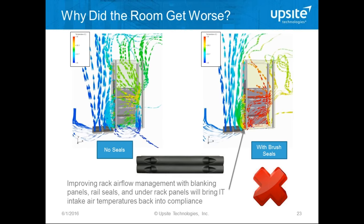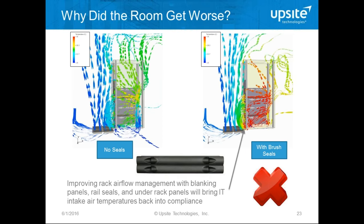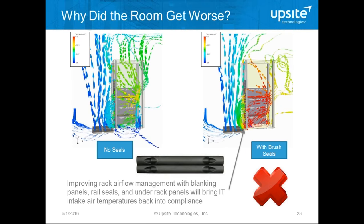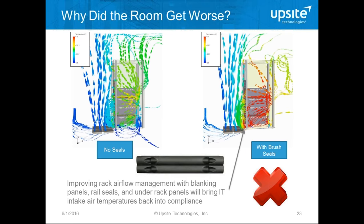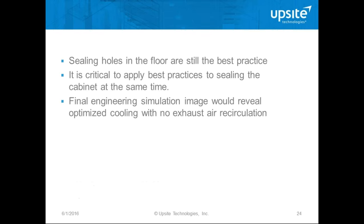What we need to do is blank the gaps. Everyone is aware of putting in blanking plates between the IT equipment between the mounting rails, but we must also consider the areas around the mounting rails at the sides, and under and over the IT equipment. Sealing holes in the floor is good practice, but it's critical to apply the same best practice to the cabinet. A final engineering simulation would reveal optimized cooling with no exhaust air recirculation.